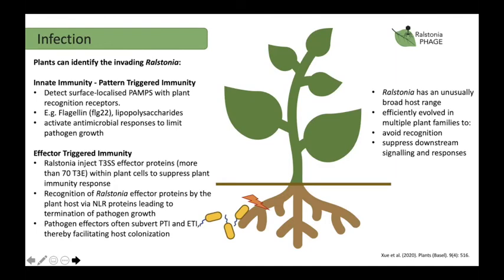The plant is not an unresponsive bystander — plants use recognition receptors to detect surface-localised pathogen-associated molecular patterns such as flagellin proteins or lipopolysaccharides, activating pattern-triggered immunity to mount an antimicrobial response. However, Ralstonia can avoid this recognition because its flagellin protein can be polymorphic, meaning it is not detected by its host.